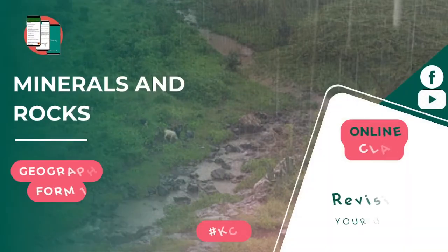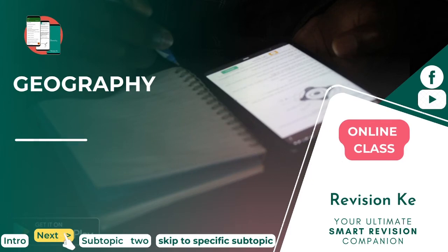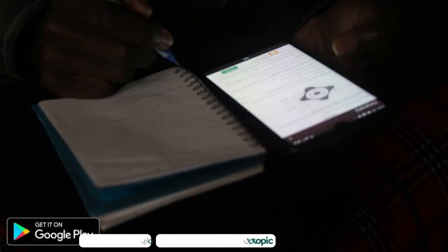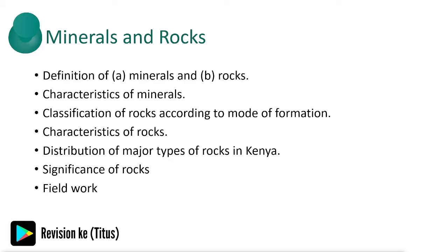Here's our next topic: we're going to look at minerals and rocks. This is our Form One geography topic, and remember you can skip to a subtopic under minerals and rocks which you're probably just interested in. In this topic, we are going to define minerals and rocks, state the characteristics of minerals, classify rocks according to mode of formation, state the characteristics of rocks, account for the distribution of major types of rocks in Kenya, explain the significance of rocks, and finally identify major types of rocks and their use within their local environment as part of our field study.